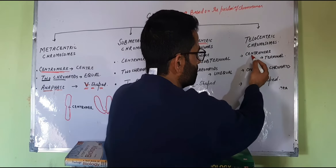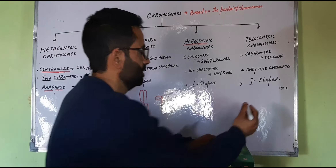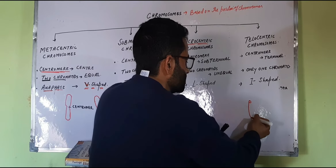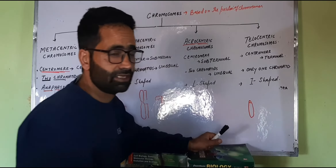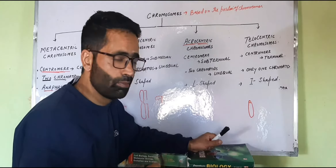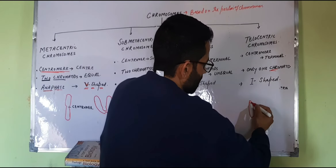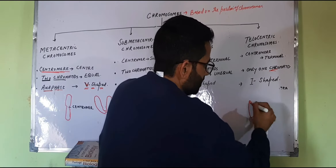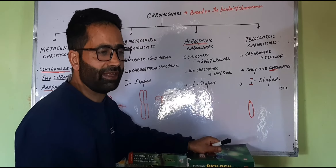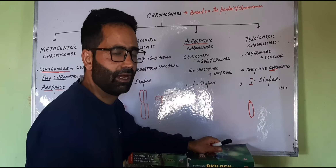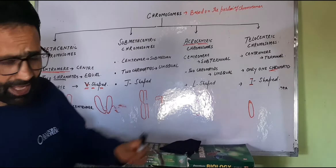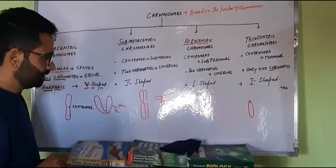The telocentric chromosome has the centromere at the terminal position. When it is present at the terminal position, there is no second arm — there is only one arm in such chromosomes. Such chromosomes also assume or attend the shape of a letter I during the anaphase stage.